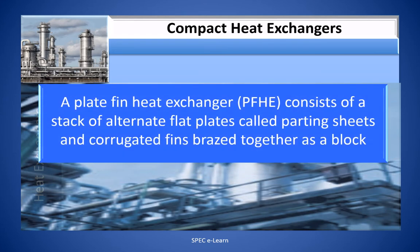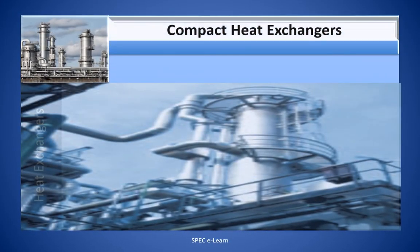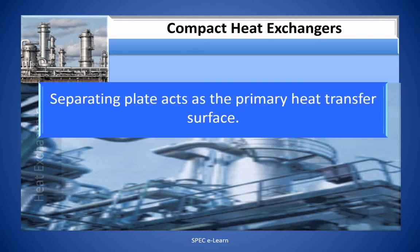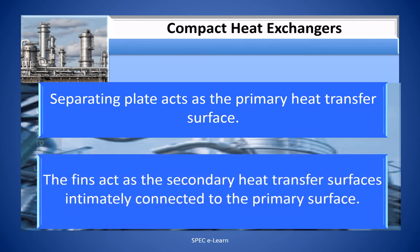A plate fin heat exchanger consists of a stack of alternate flat plates called parting sheets and corrugated fins brazed together as a block. Streams exchange heat by flowing along the passages made by the fins between the parting sheets. The parting or separating plates act as the primary heat transfer surface, while the fins act as a secondary heat transfer surface intimately connected to the primary surface.